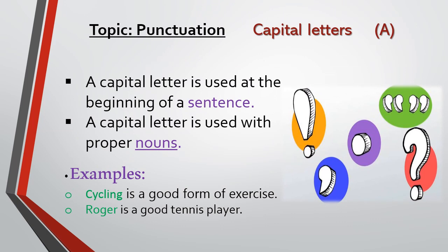First of all, we will discuss capital letters. A capital letter is used at the beginning of a sentence, and a capital letter is used with proper nouns. For example, 'Cycling is a good form of exercise' — C is capital at the start. The second sentence is 'Roger is a good tennis player' — R is capital for Roger, a proper noun. Don't forget to use a capital letter at the beginning of a sentence and for proper nouns.